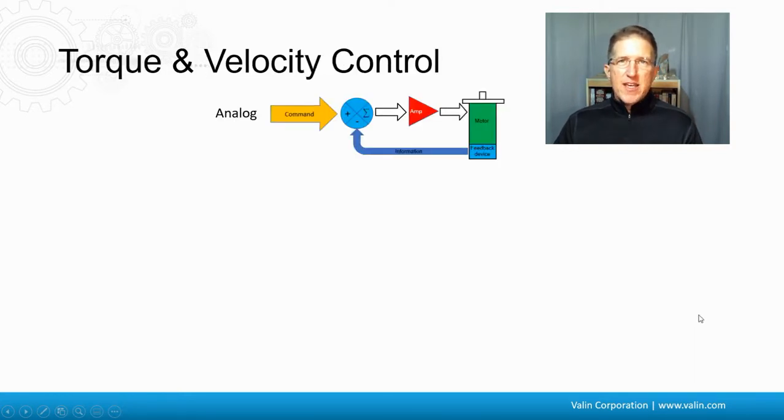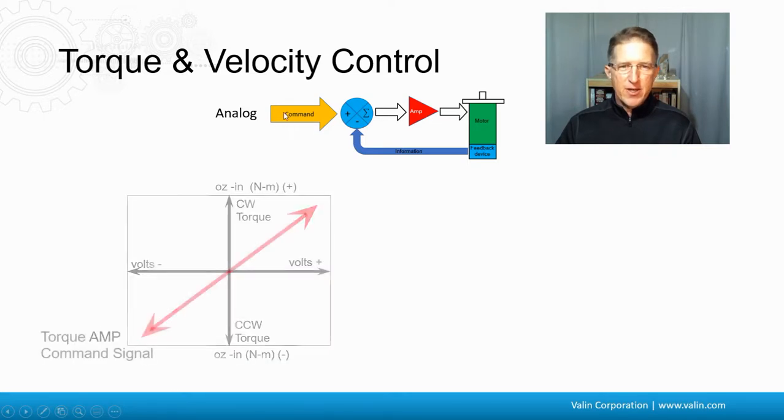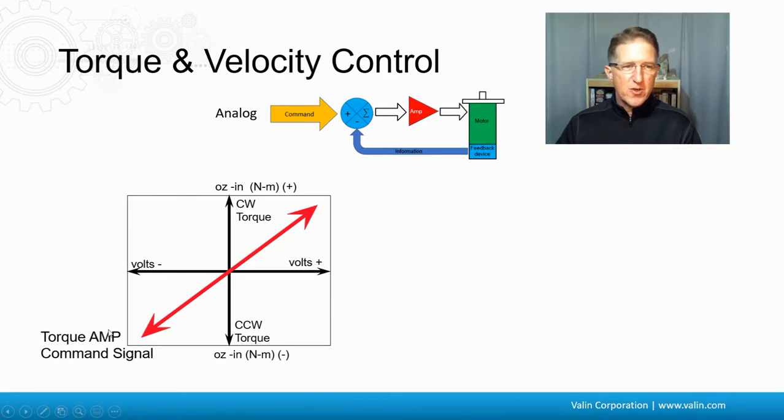All right, so let's take a look at a couple different types of signals. There's the torque and velocity control. Here's that same graphic. There's an analog input typically into here. That analog input historically has been plus or minus 10 volts. So here's the torque amplifier. Here's the minus 10 volts. Here's the positive 10 volts. And it's a linear relationship between that voltage and the torque. So if this is zero volts, this is zero torque. At plus 10 volts, you get positive clockwise torque. At negative 10 volts, you get a negative torque in the counterclockwise direction, either in ounce inches or newton meters.